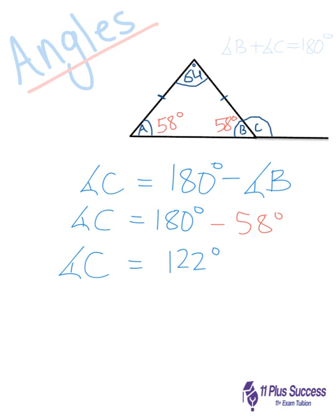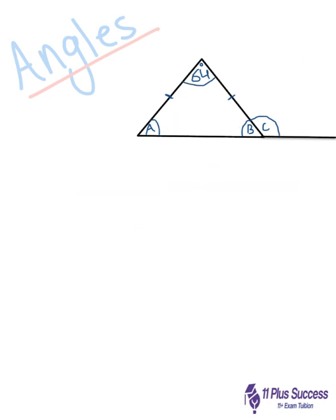Therefore, to conclude, the value of angle A is equal to 58 degrees, the value of angle B is also equal to 58 degrees, and the value of angle C is equal to 122 degrees.